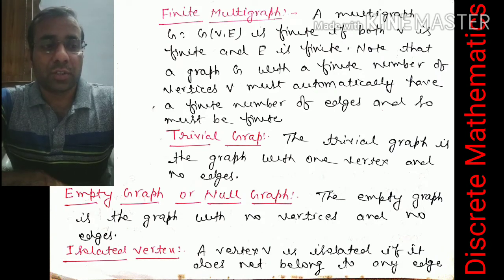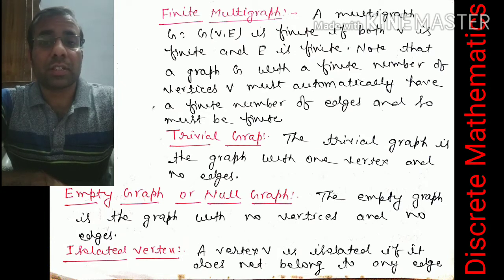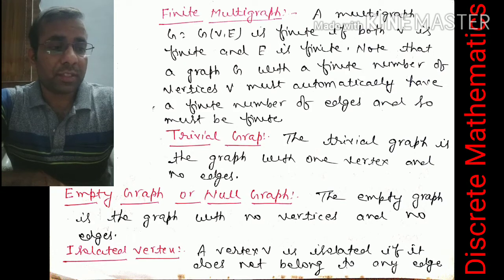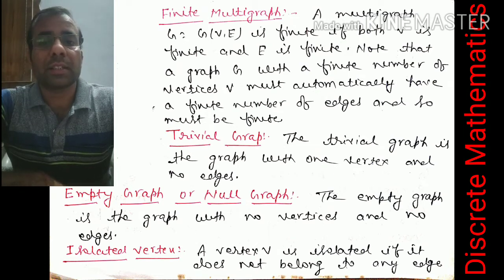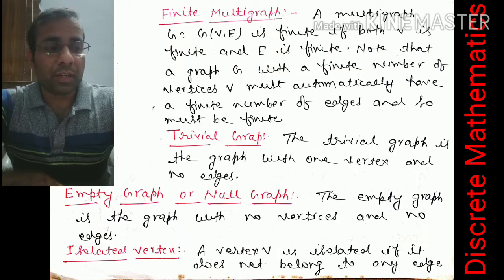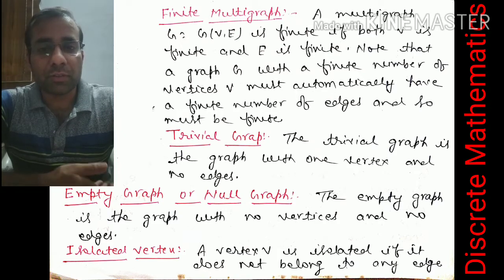The trivial graph consists of a single vertex and no edges. Next is the empty graph or null graph — a graph with no vertices and no edges, essentially an empty set. If there are no vertices, there can be no edges.